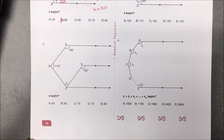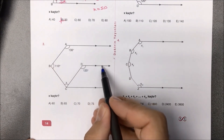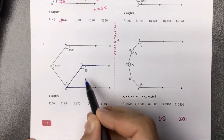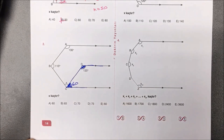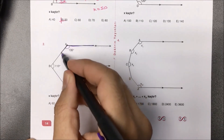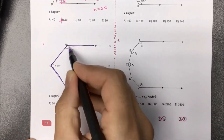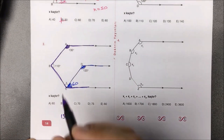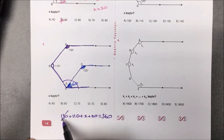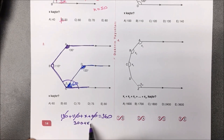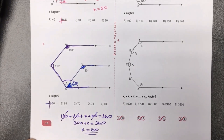İkinci örneğimize bakacak olursak verilenlere göre X kaçtır diye sorulmuş. Buradaki U kuralı dikkatimi çekiyor: burası 120 derece ise 180'den 120'yi çıkarttım, 60. Daha sonra kalem ucu kuralını kullanmak suretiyle topluyorum: 130 artı 110 artı şuranın tamamı da X artı 60 yapıyor; tamamı 360 dereceydi. 130 ile 110 topladık 240; 60 daha eklersek 300. O halde 300 ile kaçı toplarsak 360 yapacak? Aradığımız X yanıtı 60 olarak bulunmuş olur.